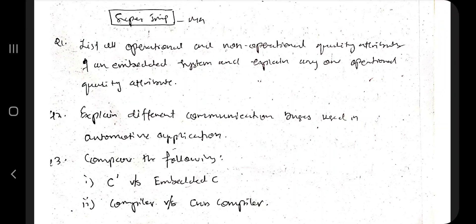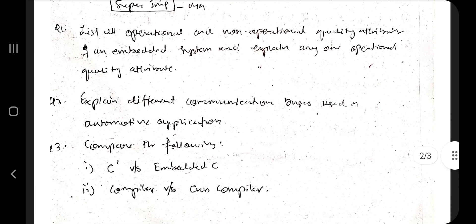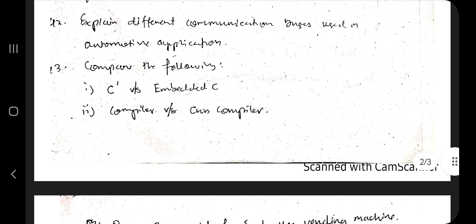Hello everyone, today in this video we will be discussing module 4 of microcontroller, and these are the super important questions. This PDF can be downloaded from the link given in the description box, and the theory explanation video is also given in the description box for more information. The main question here is the operational and non-operational quality attributes — a very simple yet very important question, so make sure you know this well.